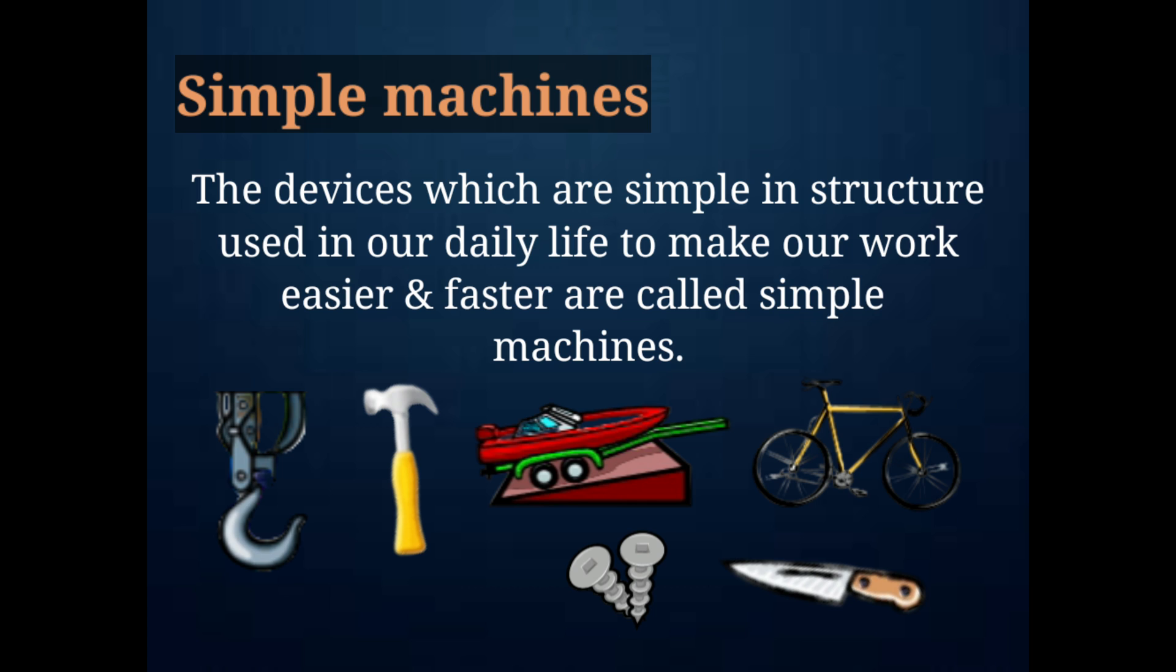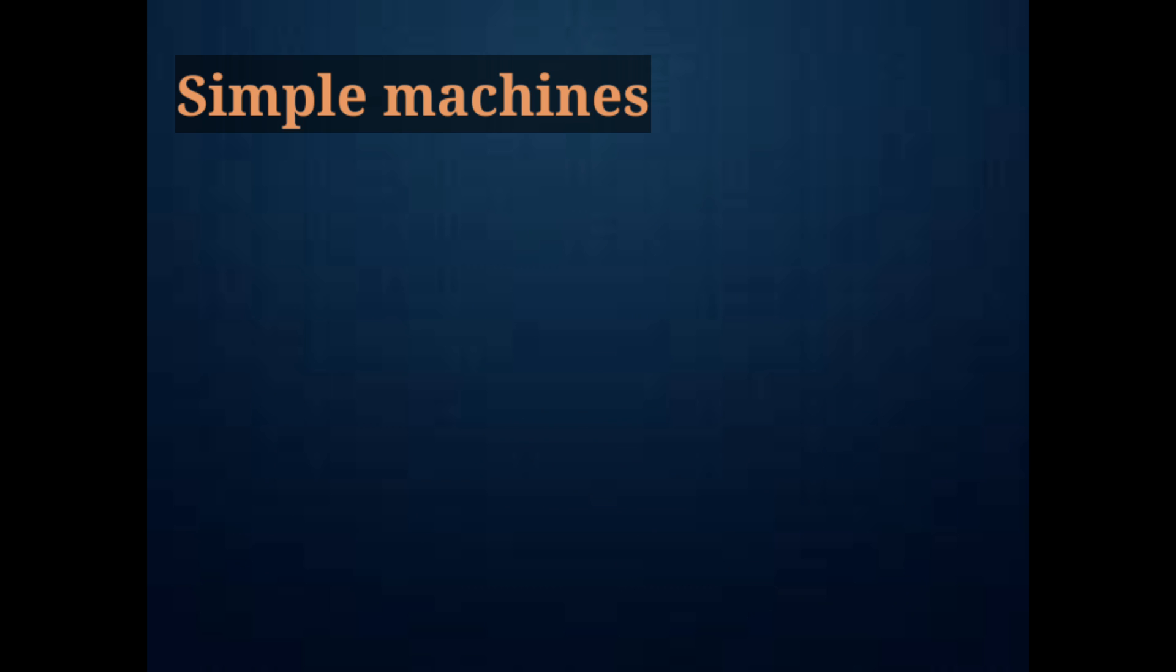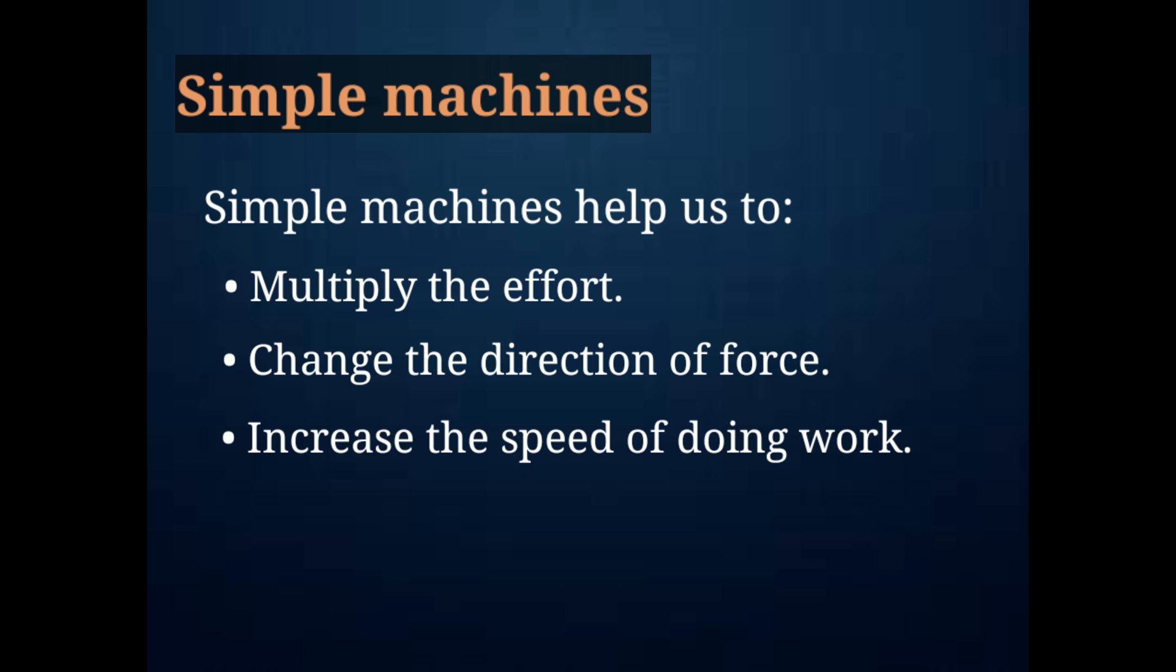They look simple in structure but can perform dangerous work in a safe and easy way. Simple machines help us to multiply the effort, change the direction of force, and increase the speed of doing work. They are very important to conduct our living activities. On the basis of structure and functions, simple machines are divided into six groups.